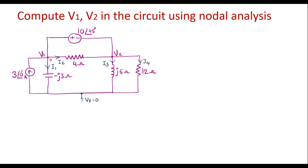Here we can see that between node V1 and V2, there is a voltage source connected directly between V1 and V2. If a voltage source is connected directly between two nodes, those two nodes are known as super nodes. Therefore, here V1 and V2 are super nodes.